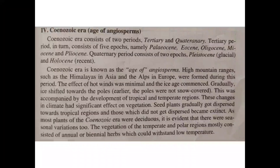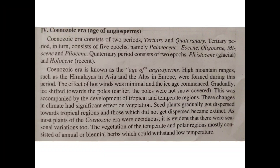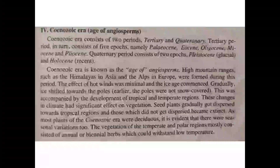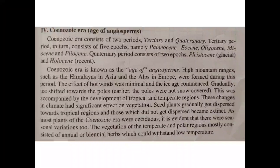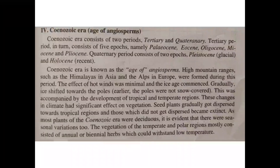The Cenozoic Era is also called the age of angiosperms. So, in summary, we have four eras: Archeozoic, Paleozoic, Mesozoic, and Cenozoic. Thank you.